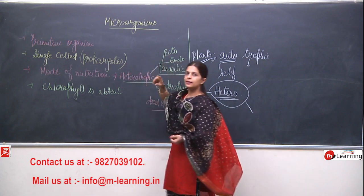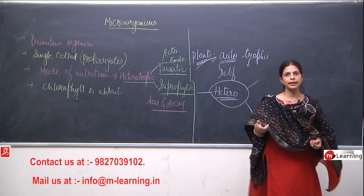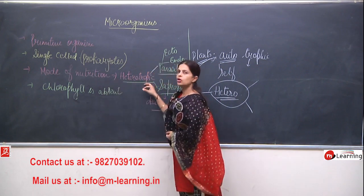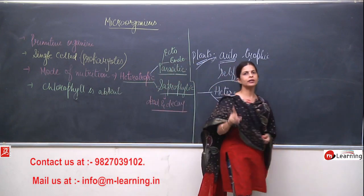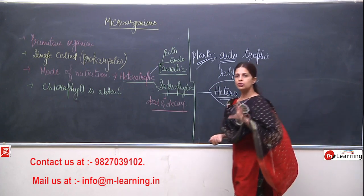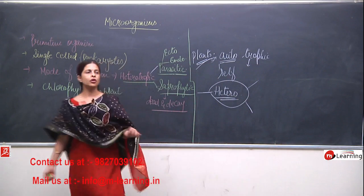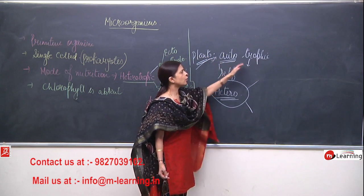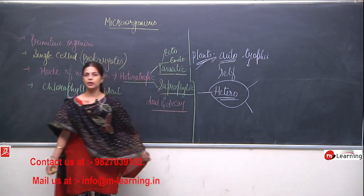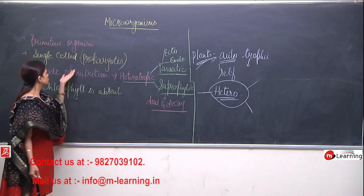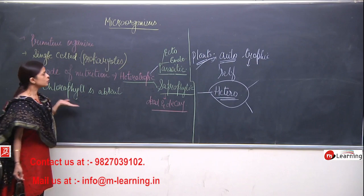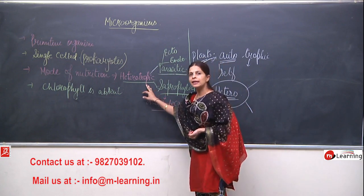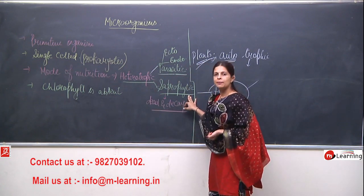Prokaryotes will be discussed in detail as it needs more explanation. The mode of nutrition of bacteria is heterotrophic — that means they are not plants. Plants are autotrophs, meaning they can prepare their own food. Bacteria do not have chlorophyll, so their mode of nutrition is heterotrophic — they can be parasitic or saprophytic.